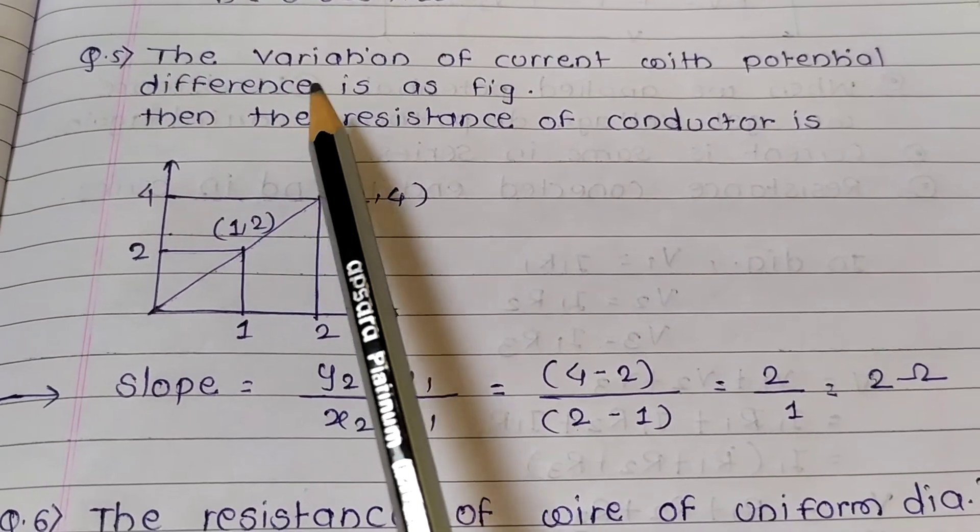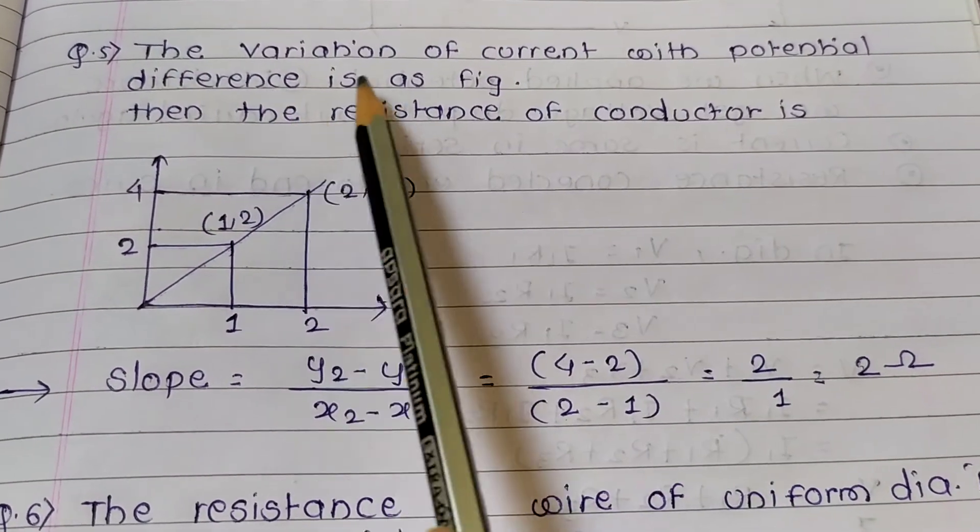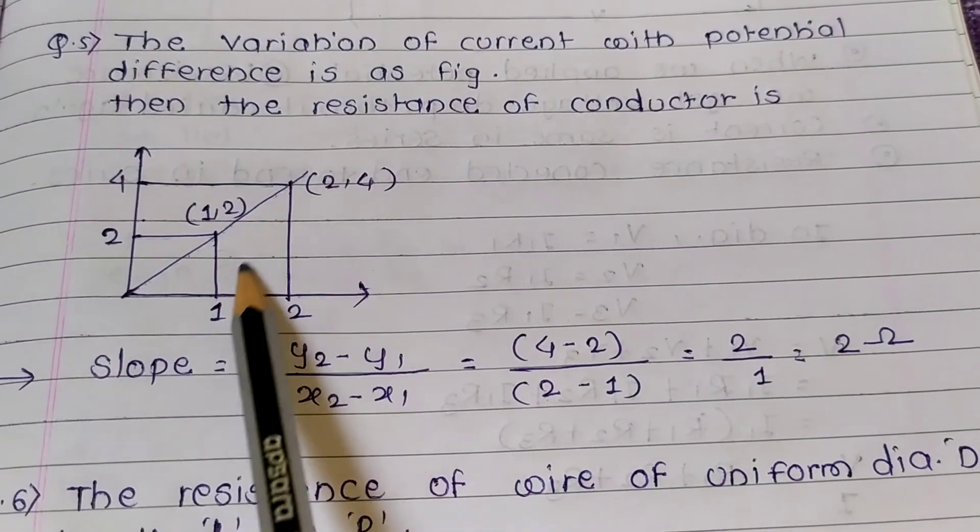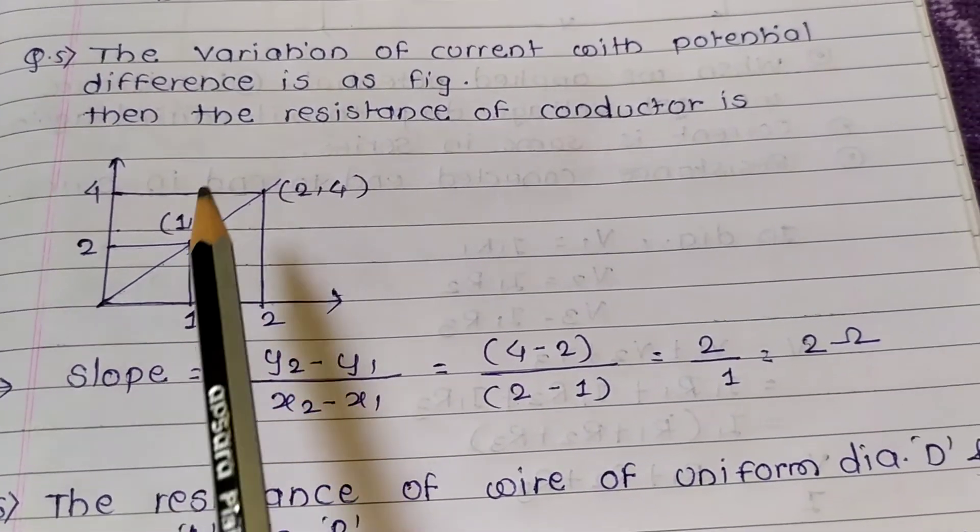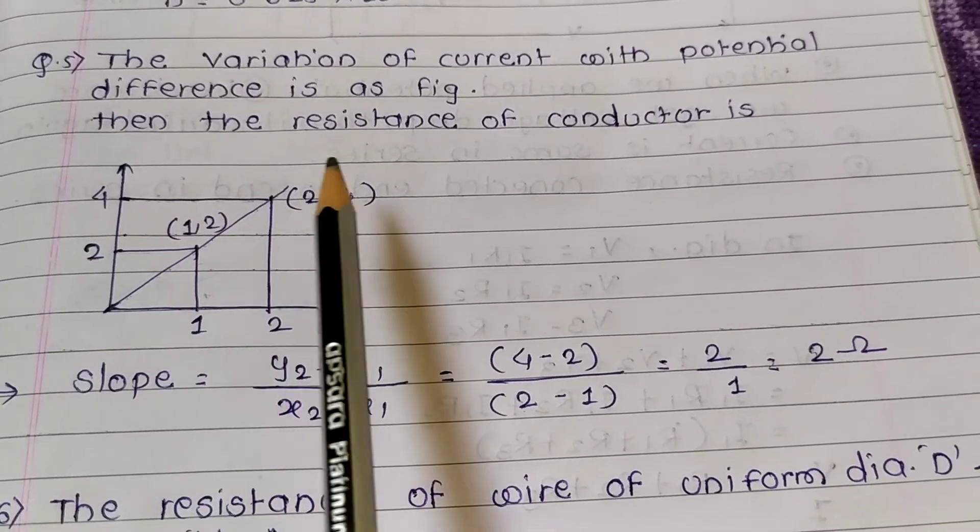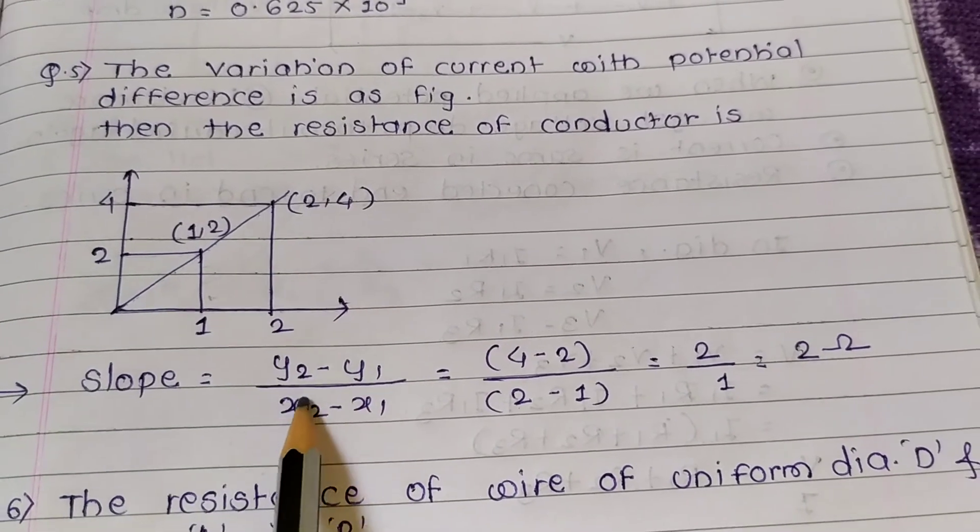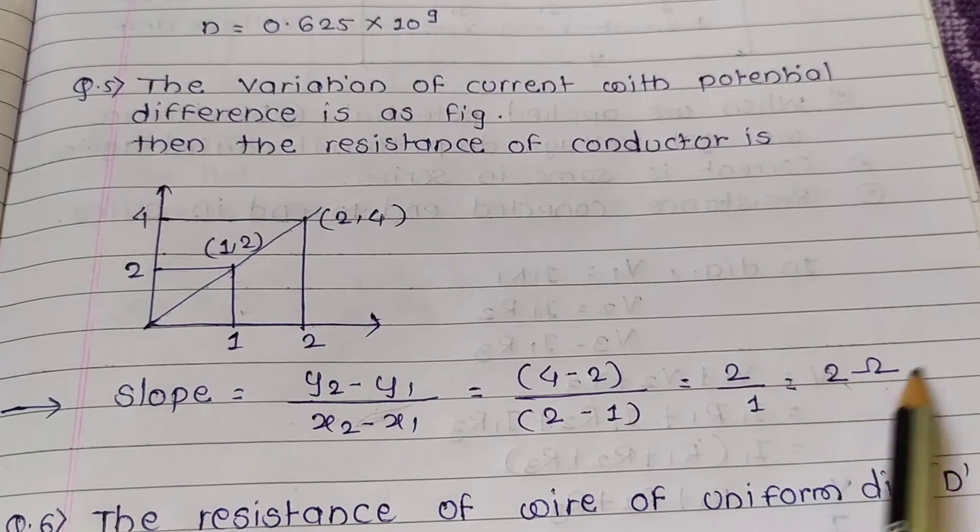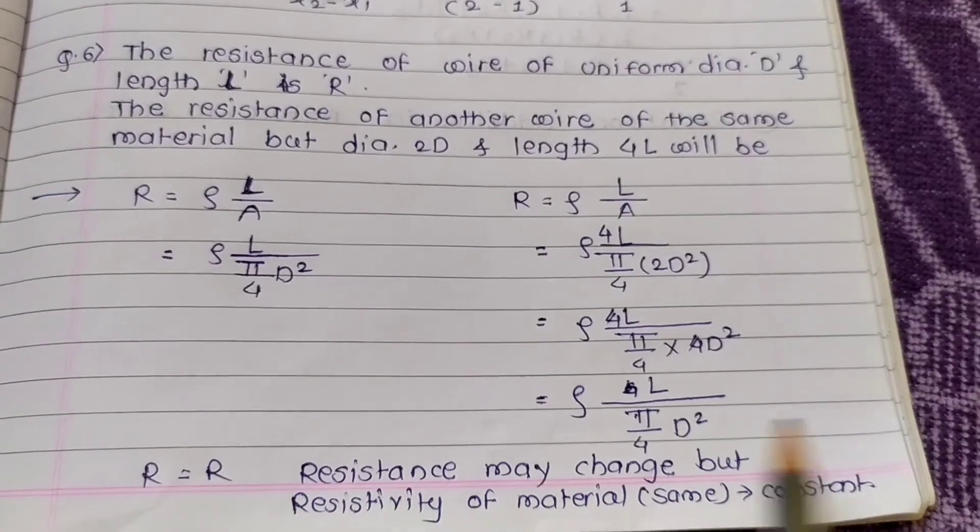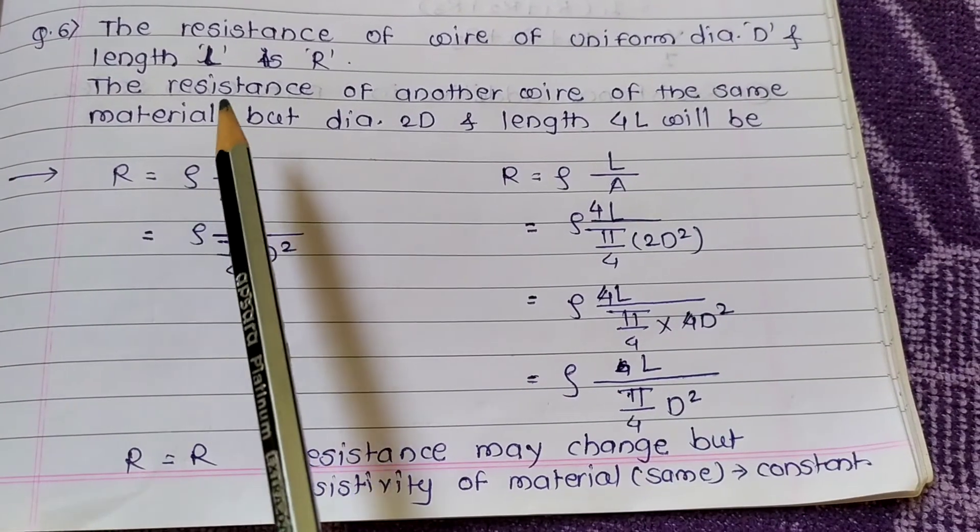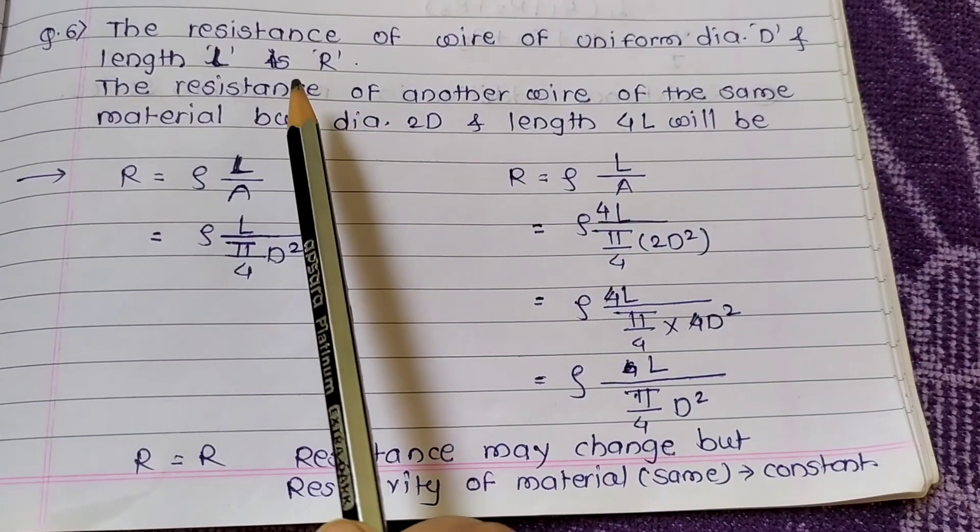The variation of current with potential difference is given. Find the resistance of conductor. We have given this slope. Y2 minus Y1 divided by X2 minus X1. This formula. We directly get 2 ohms.